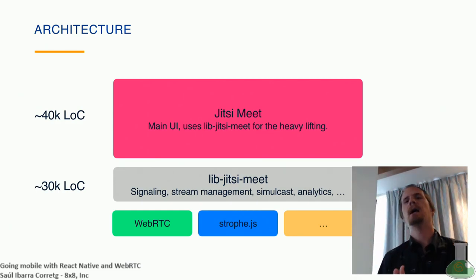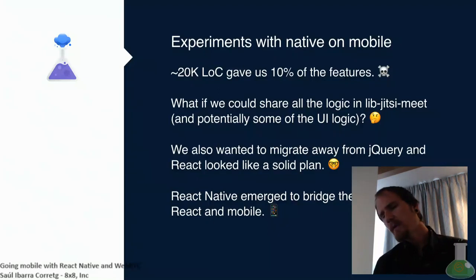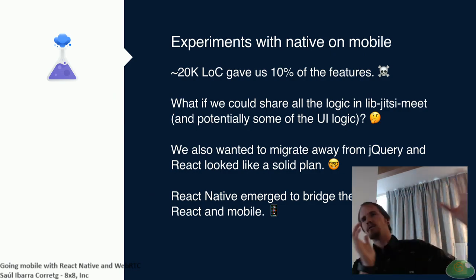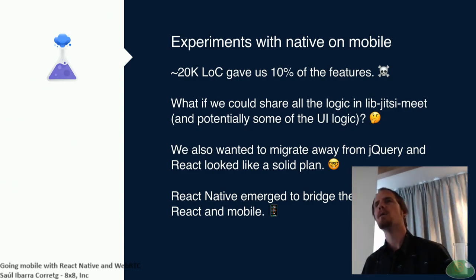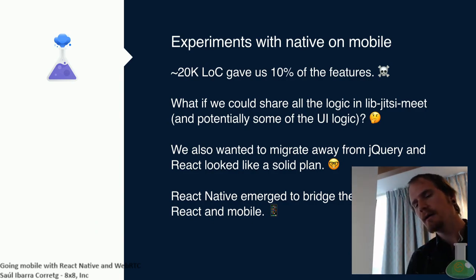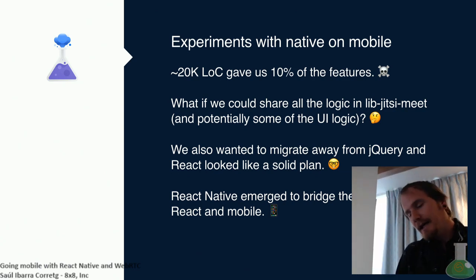When we decided we want to go mobile, how do we approach this? The typical way is to start with full native — write your iOS application in Swift or Objective-C and your Android in Java or Kotlin. We did some experiments and with around 20,000 lines of code we got about 10% of the features. We knew that was not an avenue we wanted to pursue because the effort required to achieve feature parity and then maintain it across all these platforms was just not a good way forward for us. Everything I'm saying here is what worked for us — it may not work for you.